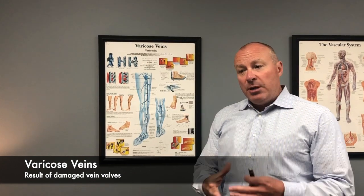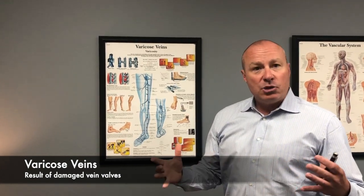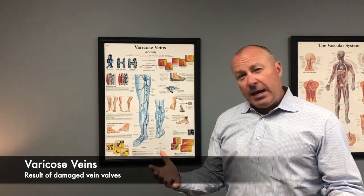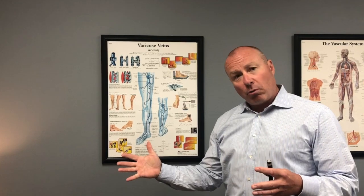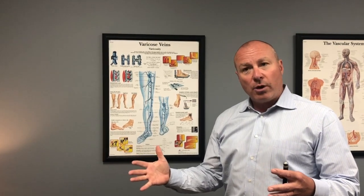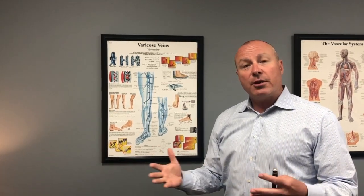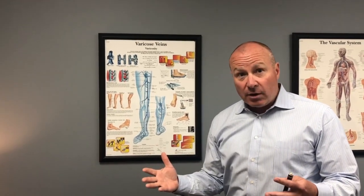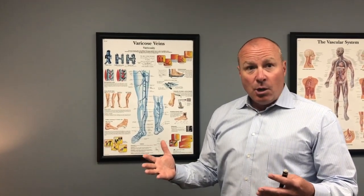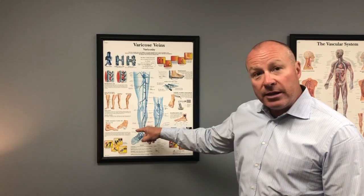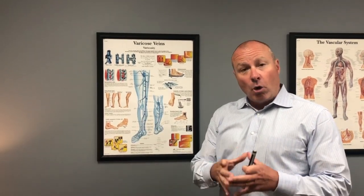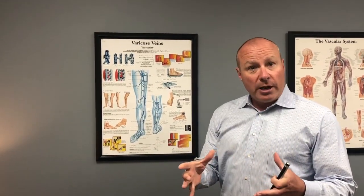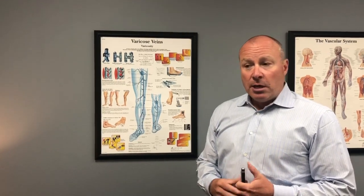What happens is people then get swelling, pain, and achiness in the leg, which can progress to the complications of varicose veins. These include skin changes around the ankle, bleeding from the veins, or an open sore in the leg called a venous stasis ulcer.